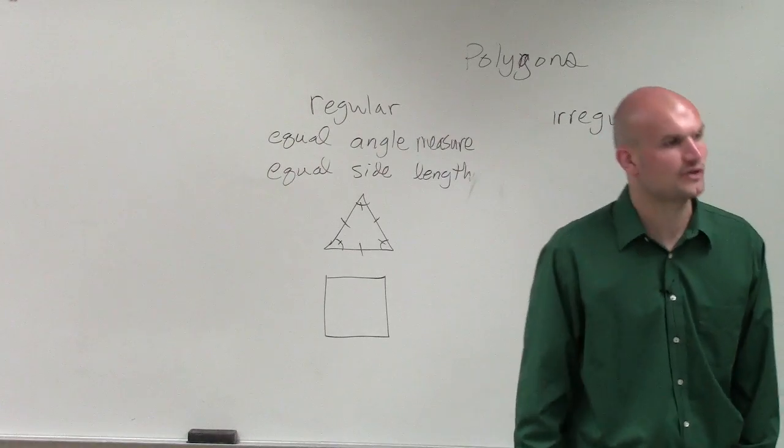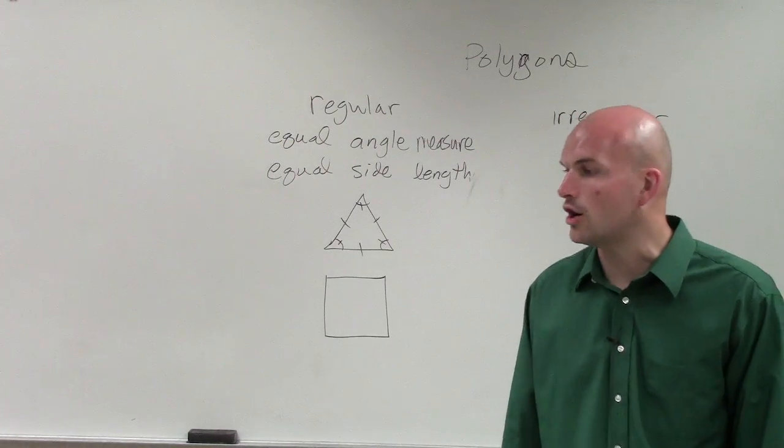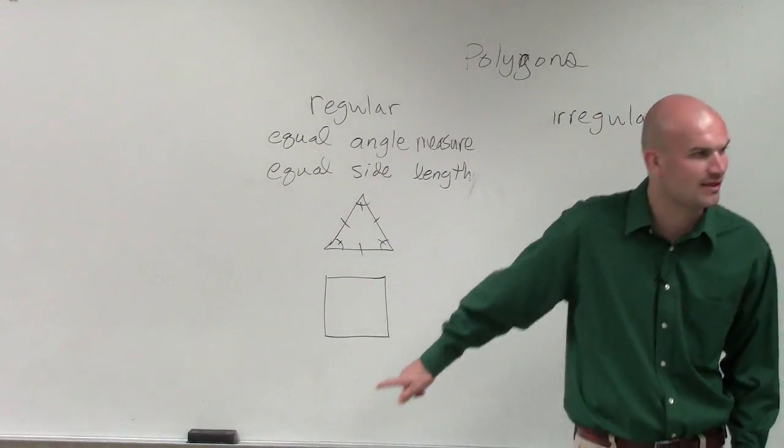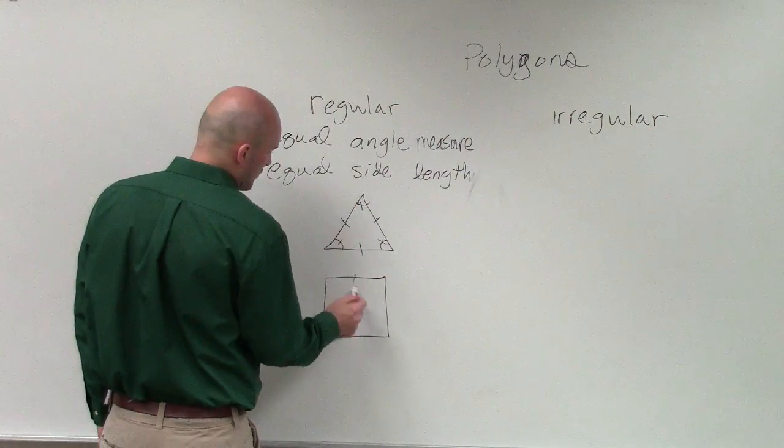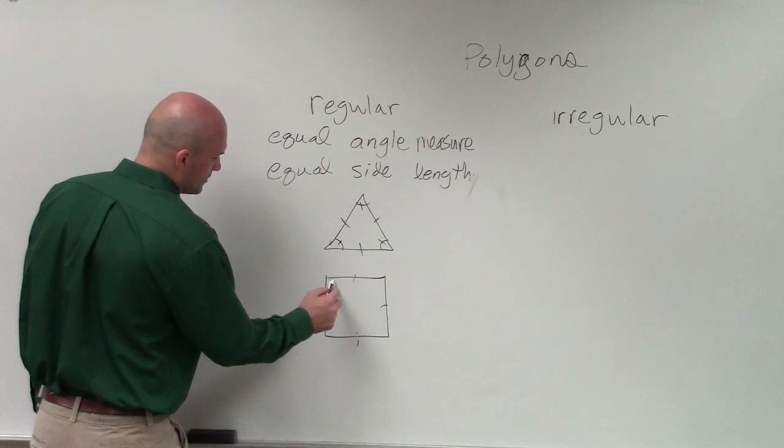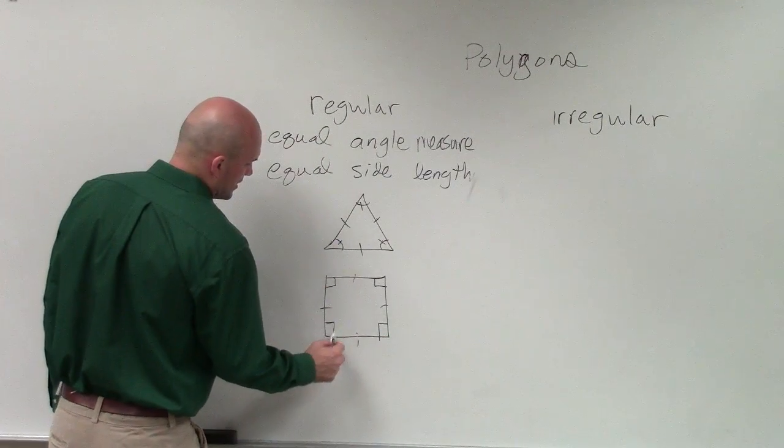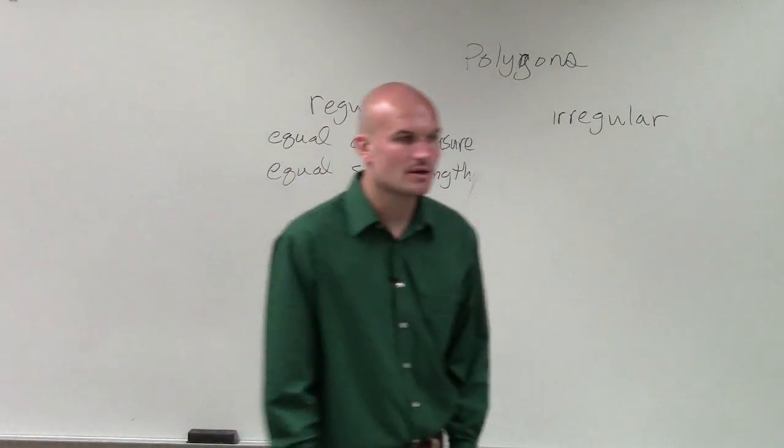Now, what about if you had a four-sided figure that has all four sides equal and all angles are equal? Does anybody know what we call that? It's a square, right? So therefore, that's going to have four sides that are equal and then four angles that are equal.